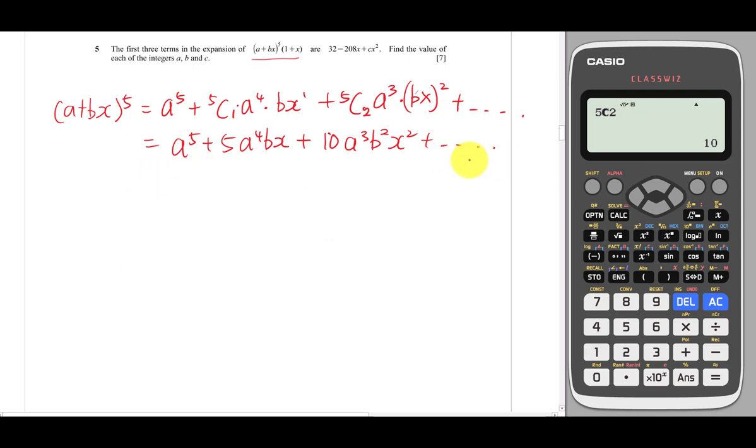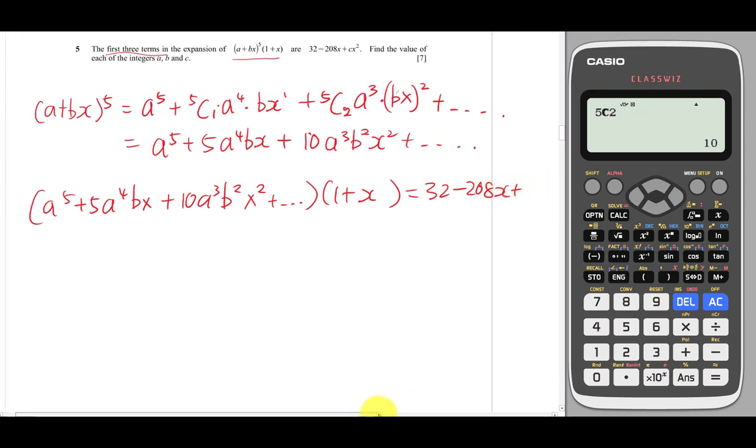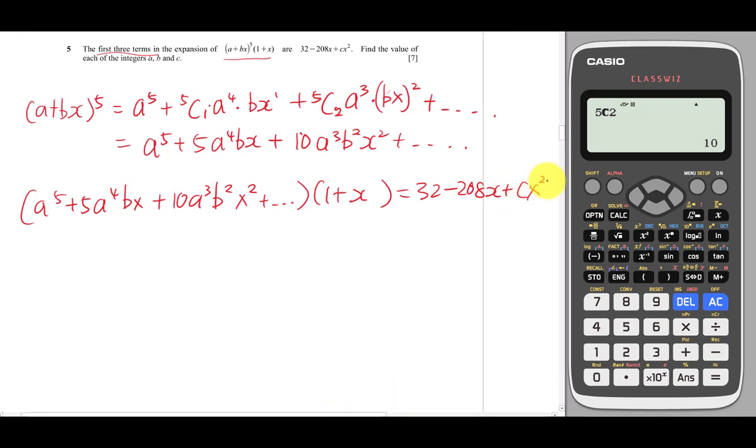I should have six terms here, but I just need the first three. So this is a^5 + 5a^4·bx + 10a^3·b^2·x^2, and then multiply with (1+x). This should equal 32 - 208x + cx^2.